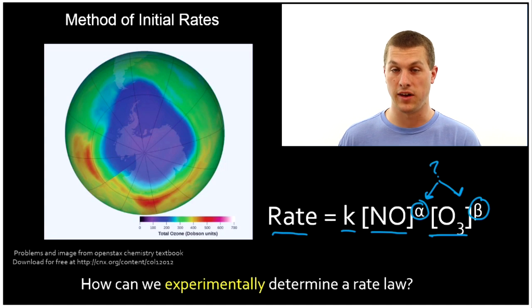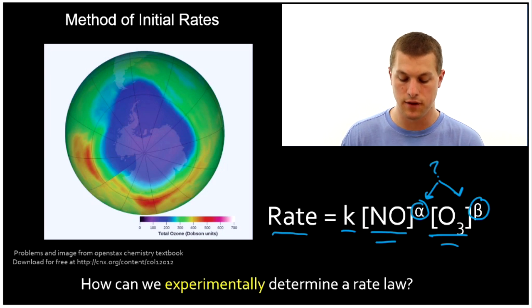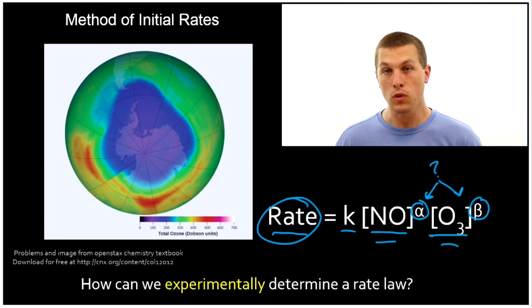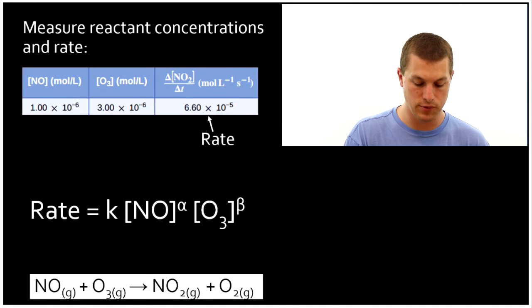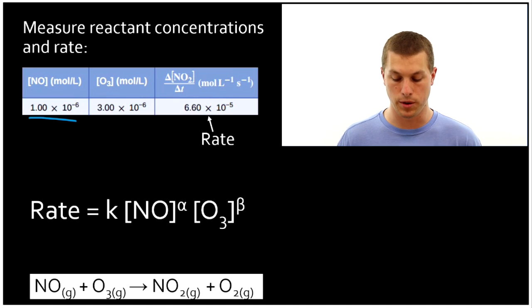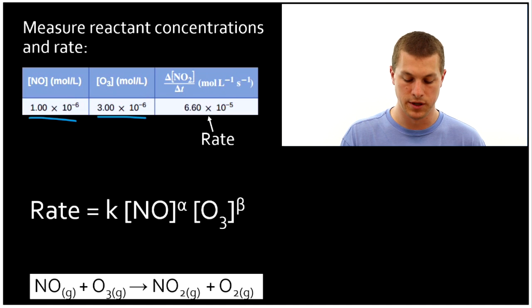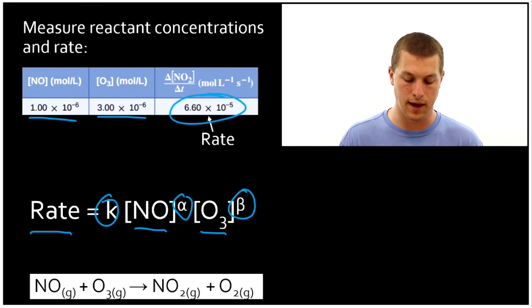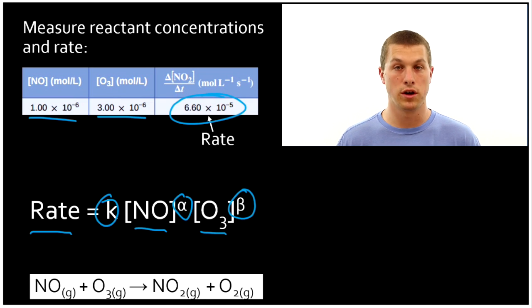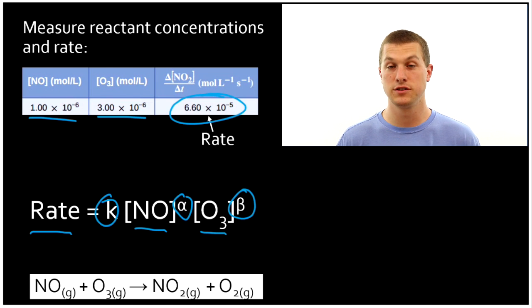The method of initial rates is going to let us solve that. We go into the lab and run a trial where we fix the concentrations of nitrogen monoxide and ozone and record the rate. For example, in one trial we set nitrogen monoxide to 1×10⁻⁶ M and ozone to 3×10⁻⁶ M, then read out the rate. But if we just ran one trial, we'd be stuck — we have one equation and three unknowns, and we can't solve that algebraically.